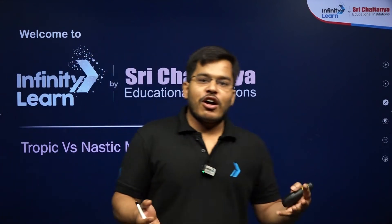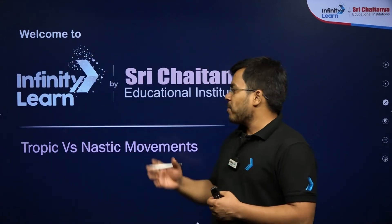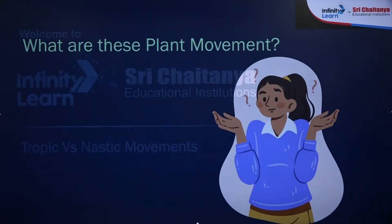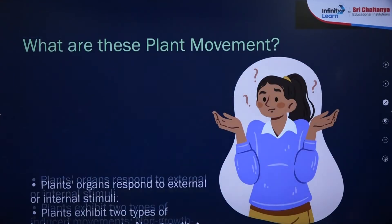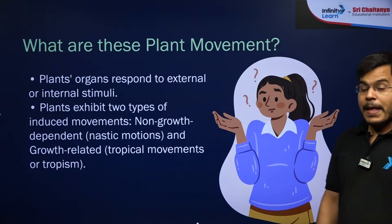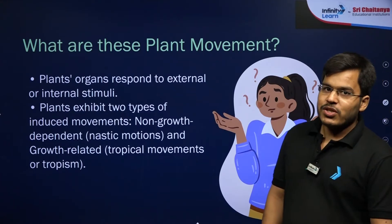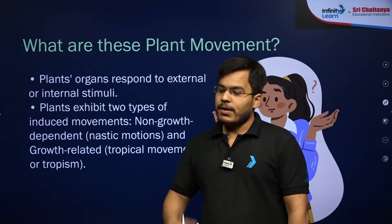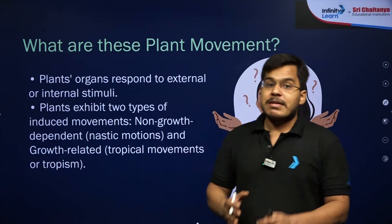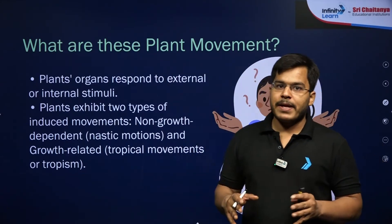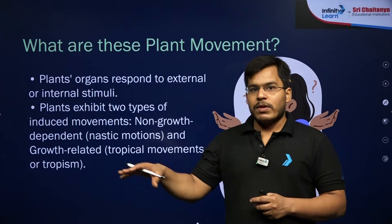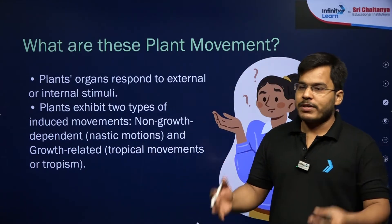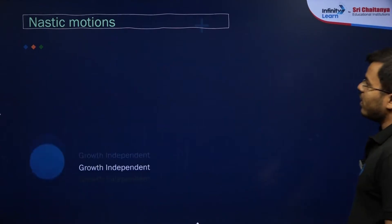Welcome students, let's talk about tropic and nastic movements within 10 minutes. These are going to be two very important movements that happen in plants. Plants usually don't move — they don't show locomotion from one place to another — but certain movements in plants do happen, keeping them at one position. These are your tropic and nastic movements.